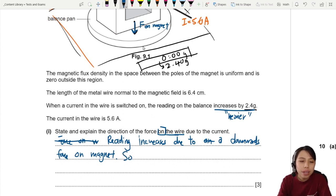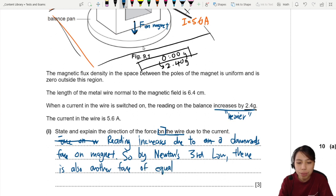So by Newton's third law, we talk about name drop Newton's third law. So by Newton's third law, there is another force. Also another force of equal magnitude, but upwards direction.